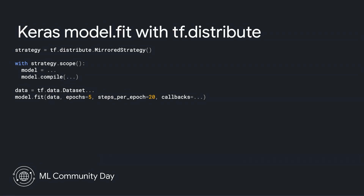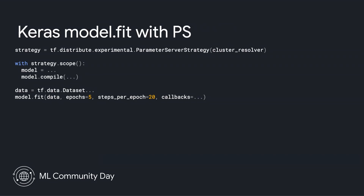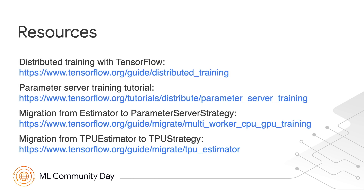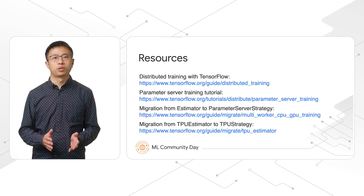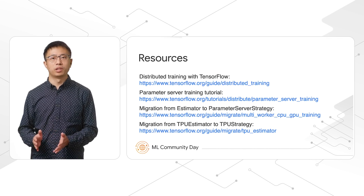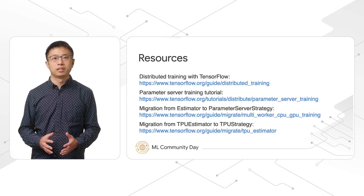This is how we use Mirror Strategy with Keras model.fit. To use it with Parameter Server Strategy, we just need to replace Mirror Strategy with Parameter Server Strategy — the rest is exactly the same. Here are some resources for TF.distribute and parameter server training. We have also provided guides and tutorials on how to migrate from Estimator and TPU Estimator to TF.distribute. Thank you.